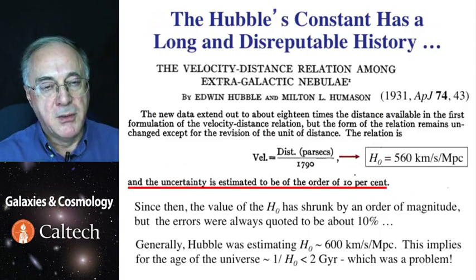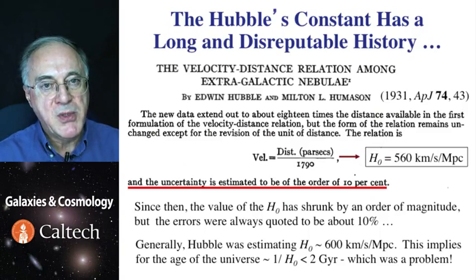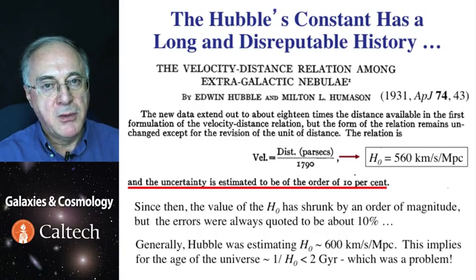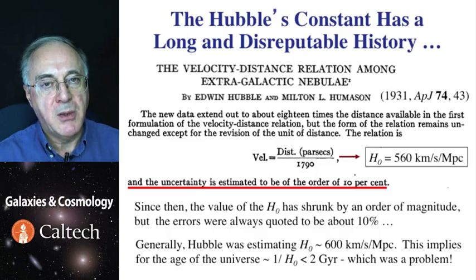This is a hard thing to do, and thus measurements of the Hubble constant have a somewhat disreputable history. Hubble's own estimate of it was an order of magnitude off from what we know today is more or less the correct value. Through the history, people always thought they knew it to about 10% accuracy, even though its value changed by a whole order of magnitude.